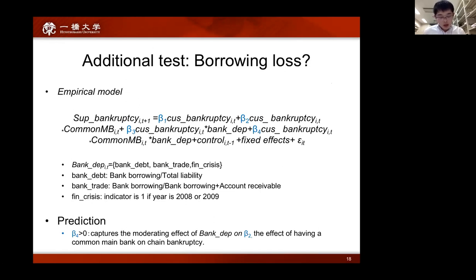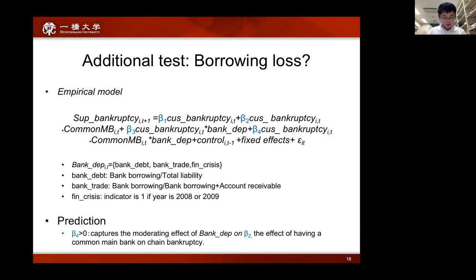We have a model including bank dependence variables and the financial crisis variable. We use three bank dependence variables: bank debt, defined as total bank borrowing divided by total debt; and bank trade, defined as total bank borrowing divided by bank borrowing plus accounts receivable. The financial crisis dummy takes one if the fiscal year is 2008 or 2009. The variable of interest is the triple cross-term of customer bankruptcy, bank dependence, and common main bank. These results are as we expected.